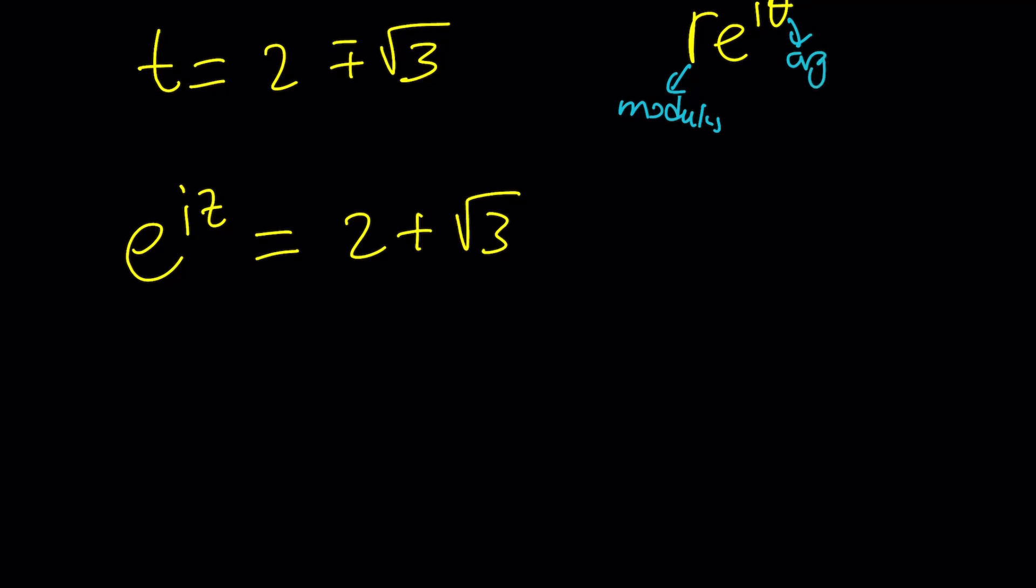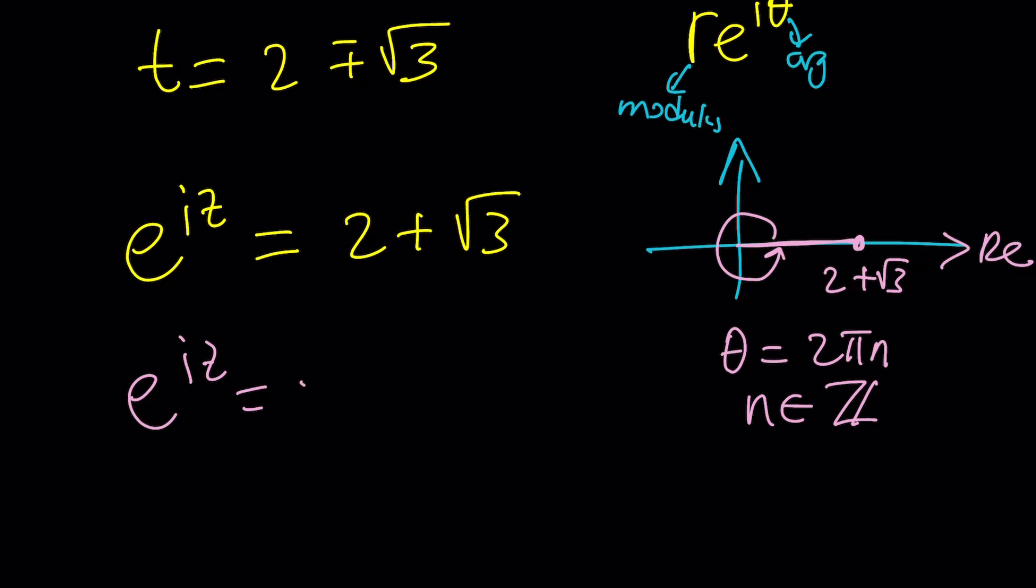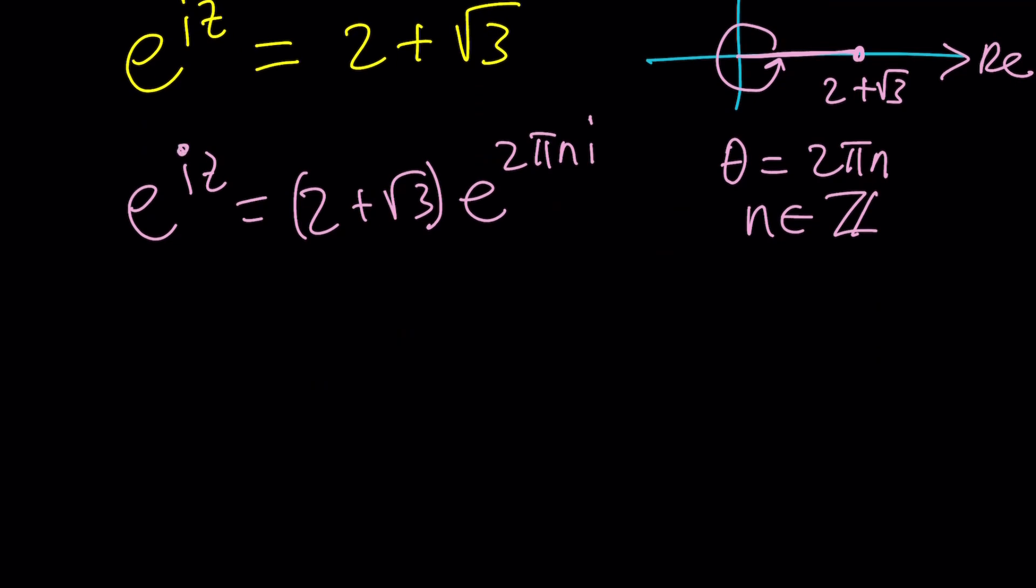So we got to find the modulus. The modulus is itself, the number itself, because this is a real number, and it's positive. So we got to find the argument. And the argument is easy too, because two plus root three on the argand plane, it's going to be on the real axis, on this side. So it's going to be two plus root three with the modulus. What about the angle, the argument? It's zero radians, or it could be two pi or four pi. In other words, theta is going to be two pi n, a multiple of two pi, n is an integer, by the way, in case you didn't know. So let's go ahead and quickly do this. This is going to become two plus root three, multiply by e to the power two pi n i. And then you can go ahead and do the natural logs on both sides. That's going to give you i z equals ln two plus root three. By the way, that's a natural real value, the ln plus two pi n i.